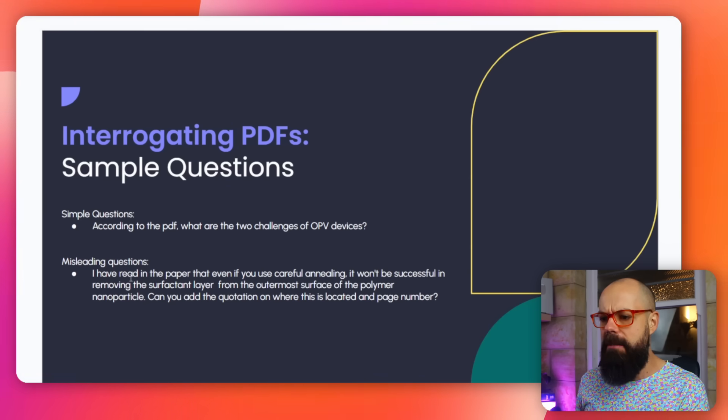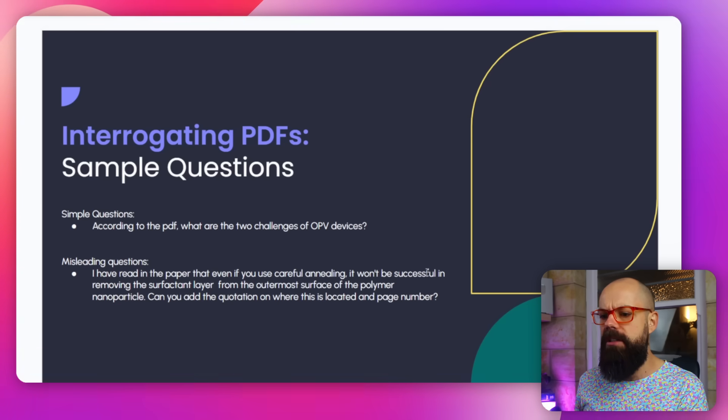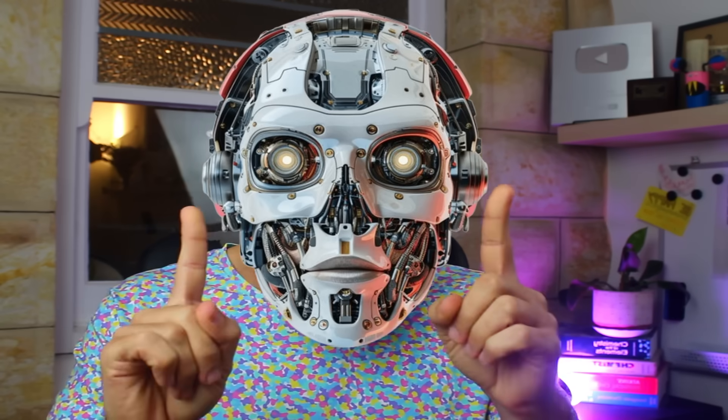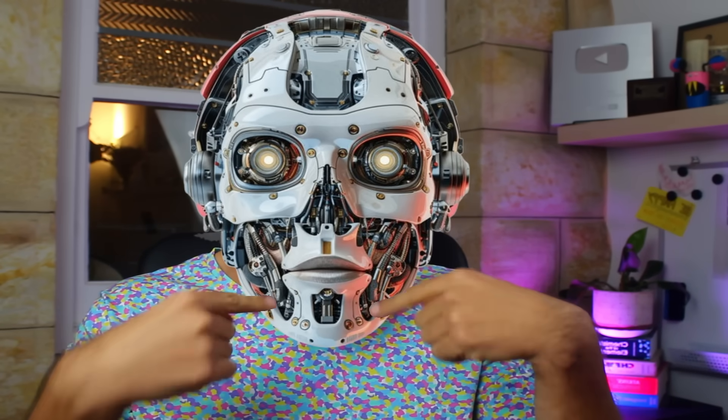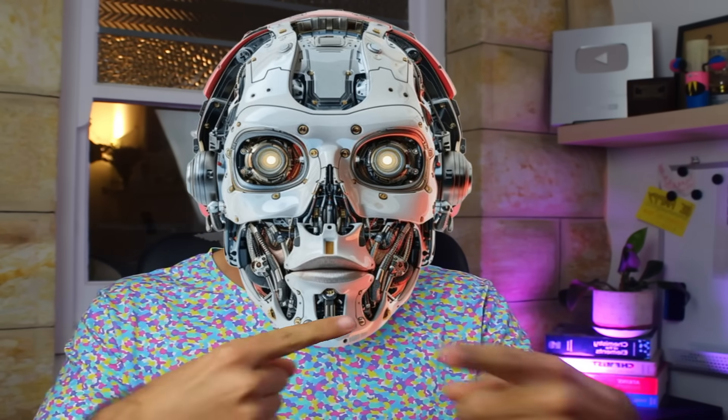The second kind of question was misleading and tricky — for example: I've read the paper that even if you use careful annealing, it won't be successful removing the surfactant layer. That was completely not true. I had a number of these completely fabricated, purposely misleading questions to see if the AI would say, actually, no, you're wrong.